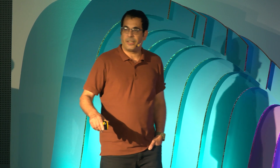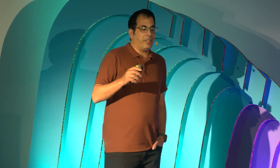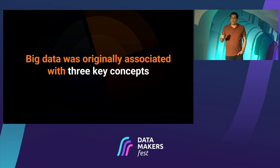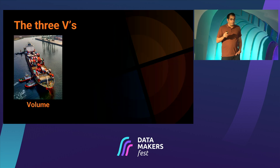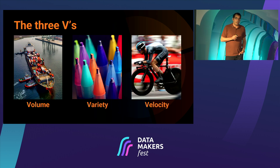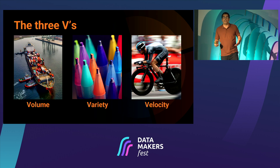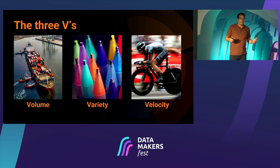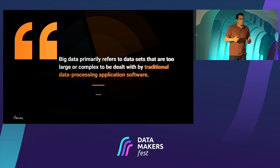Let's take a step back and try to understand, first of all, what is big data? Big data was originally associated with three key concepts — the three Vs: volume, velocity, and variety. Velocity, by the way, is the major reason why we have those big data warehouses today. But there is another identification for big data — as you can see on Wikipedia, big data primarily refers to data sets that are too large or complex to be dealt with by traditional data processing application software.